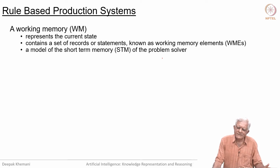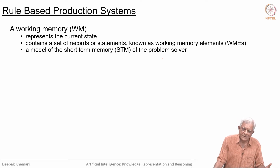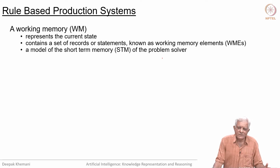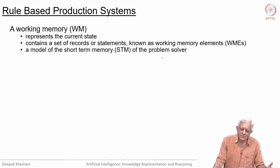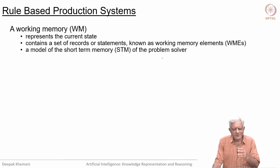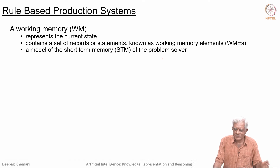The knowledge base in a rule-based system that we are describing is called the working memory. It represents a current state and contains a set of records or statements known as working memory elements, or WMEs as we will call them. The working memory is the model of the short-term memory of the problem solver — it is the data that the problem solver is working on. It is not problem-solving knowledge; it is the data, and therefore we can think of that as short-term memory.